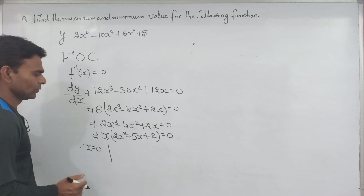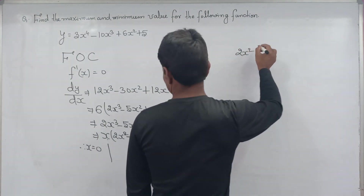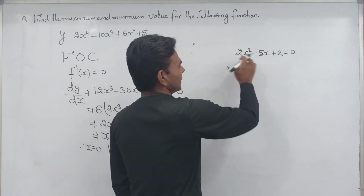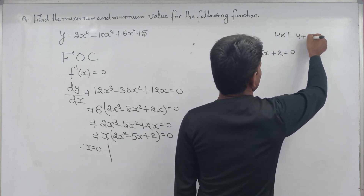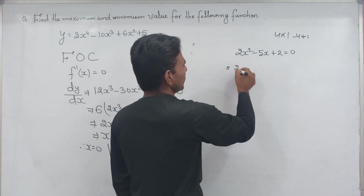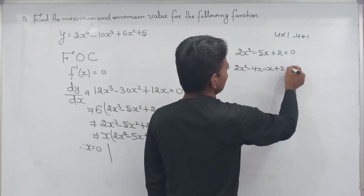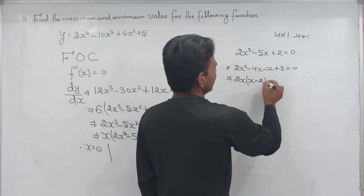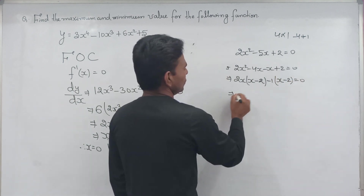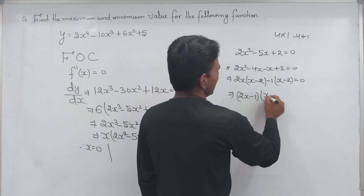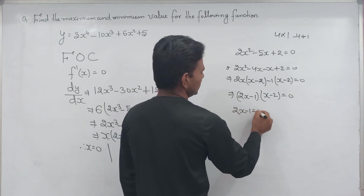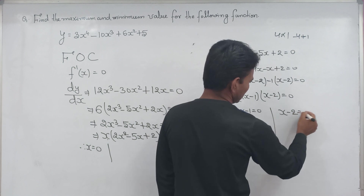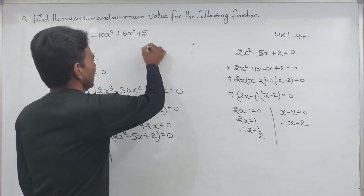But the quadratic equation needs to be factored. So we have 2x square minus 5x plus 2 equal to 0, which factors as 2x square minus 4x minus x plus 2 equal to 0, giving us (2x minus 1)(x minus 2) equal to 0. Therefore 2x equal to 1, so x equal to 1/2, and x minus 2 equal to 0 so x equal to 2.